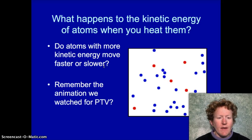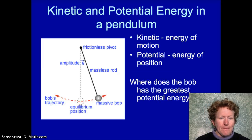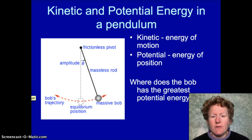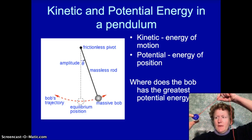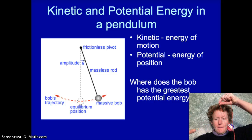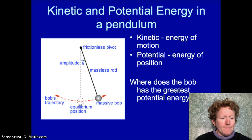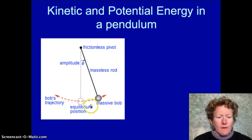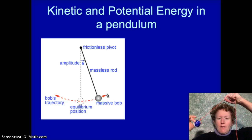When you add heat energy to atoms, their kinetic energy increases — that means their energy of movement increases and they move faster. Today we're going to talk about kinetic and potential energy in pendulums. When you hold a pendulum up, it has potential energy — the potential to swing back and forth. When it's actually moving, it has kinetic energy. Potential energy is energy of position; kinetic energy is energy of motion.